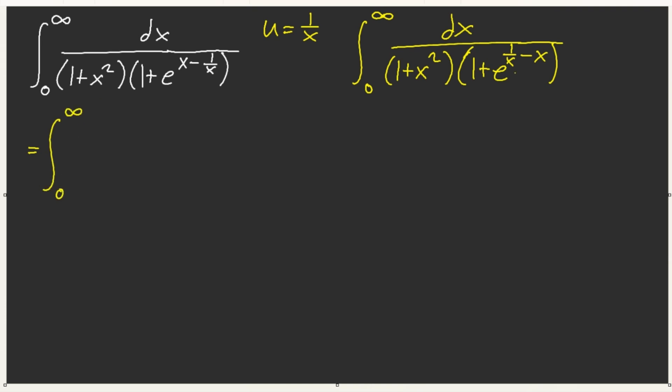But then we can use algebraic manipulation. Multiply e to the x minus 1 over x to both top and bottom. And we get x minus 1 over x, e to the x minus 1 over x, plus 1. You already know where this goes, right?